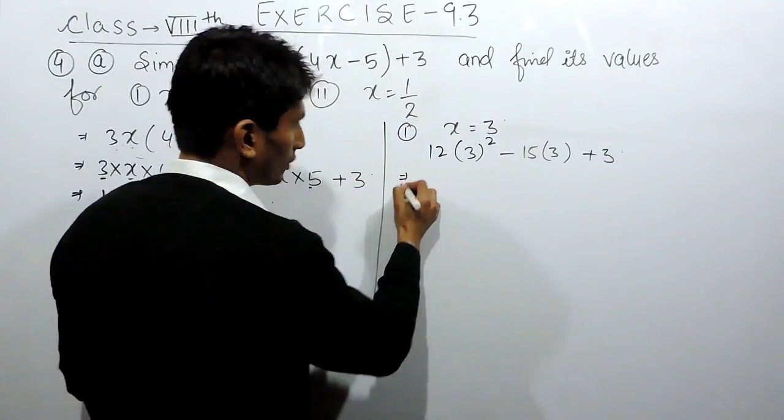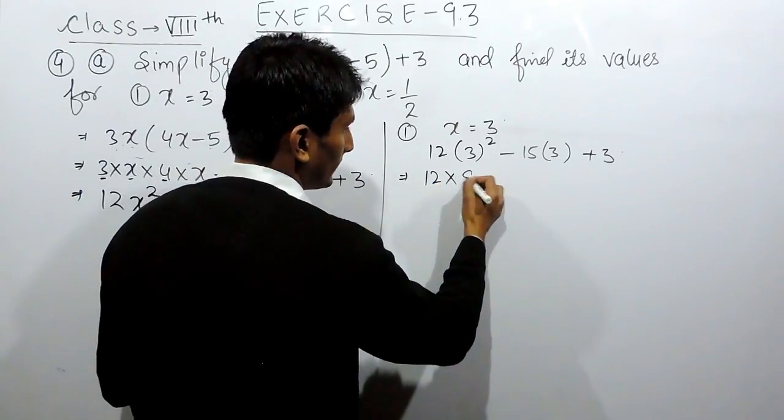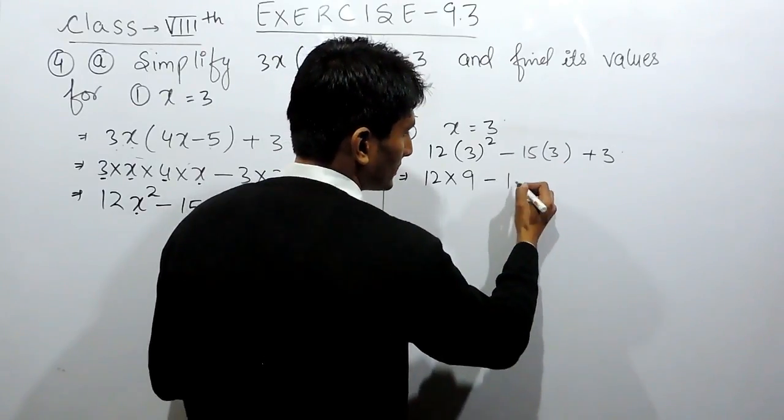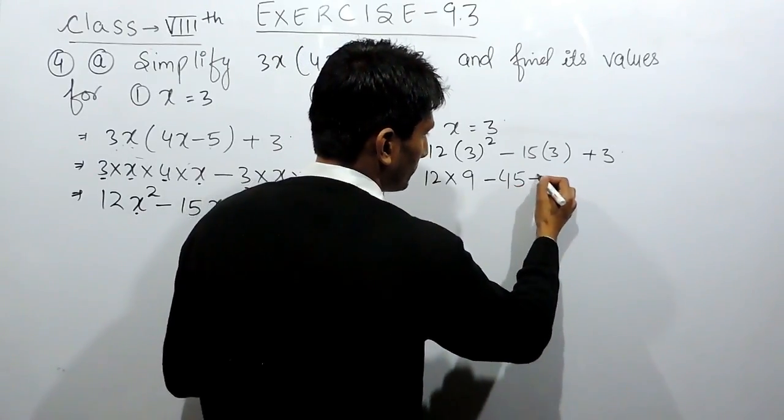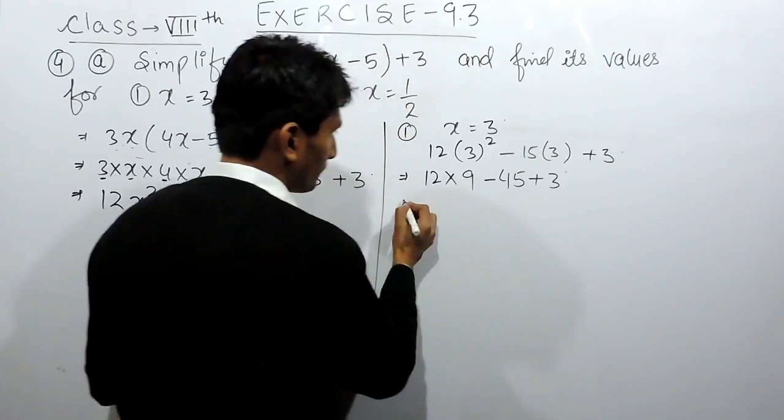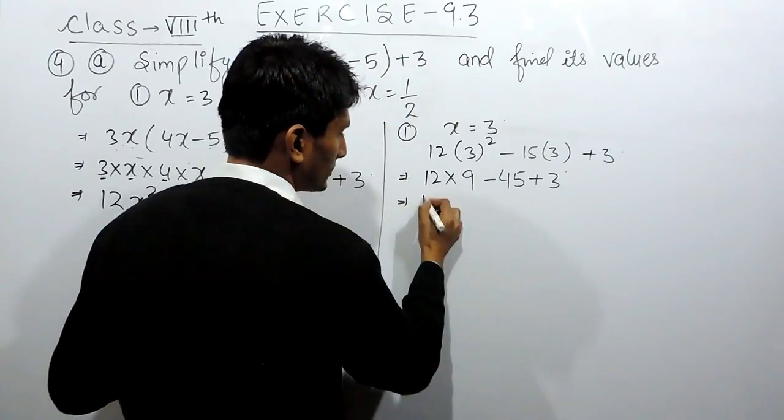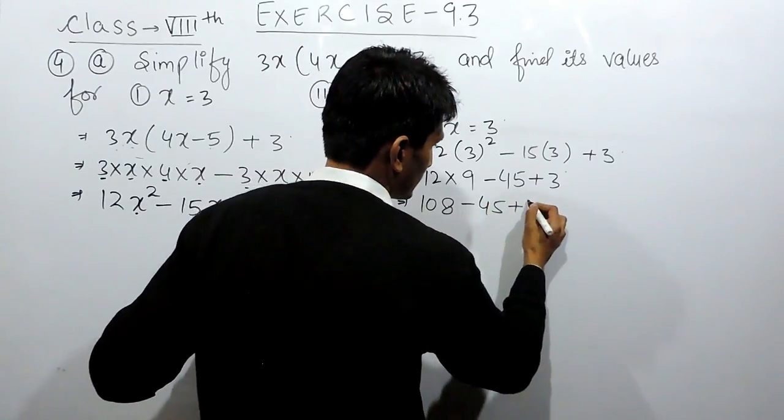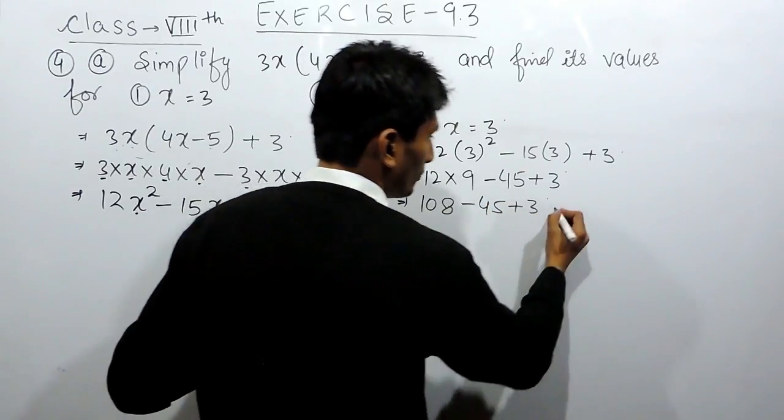Further solving this, this will be 12 multiplied by 9, and this is 15 multiplied by 3 is 45 plus 3. This will be 12 into 9 is 108, this is 45 and this is 3.